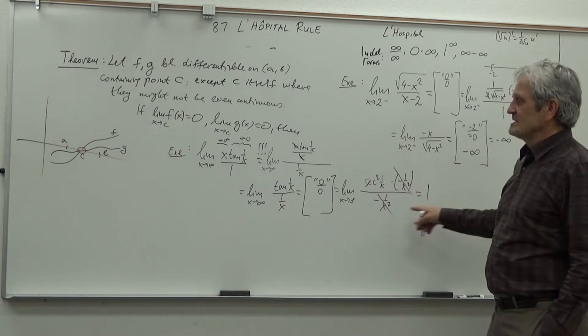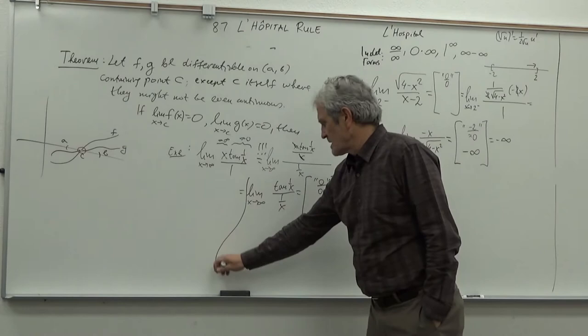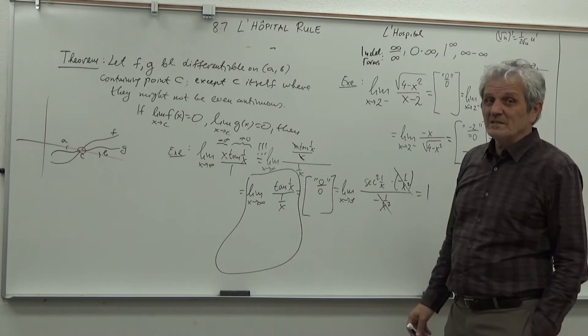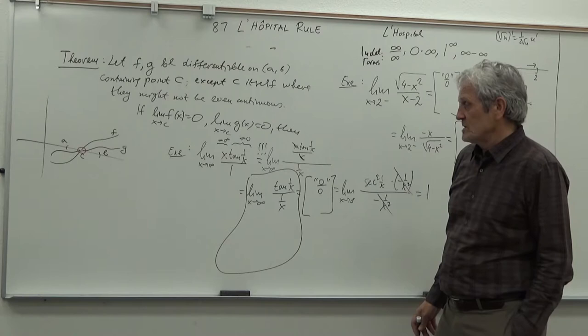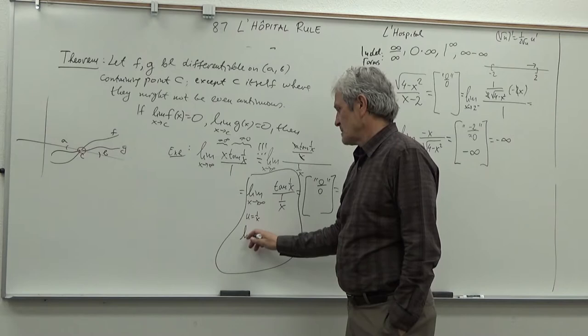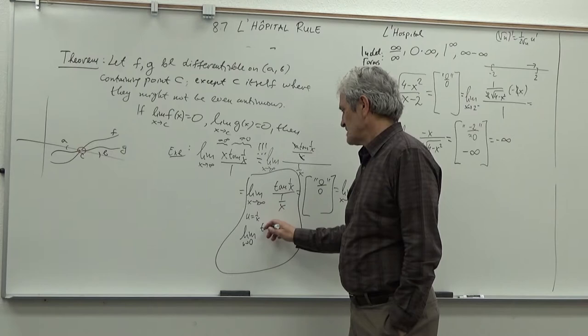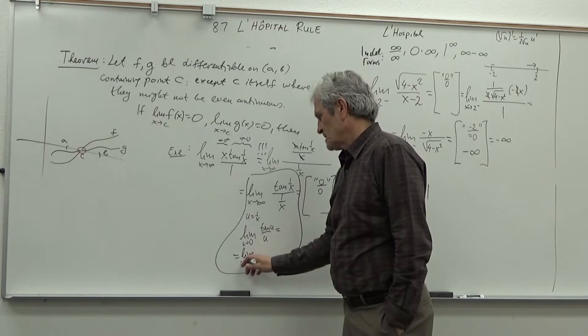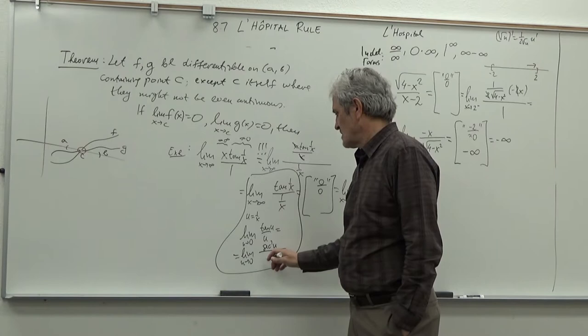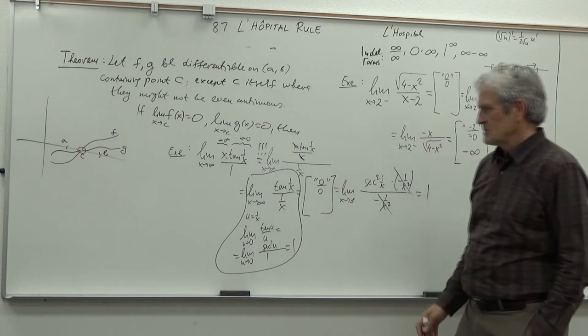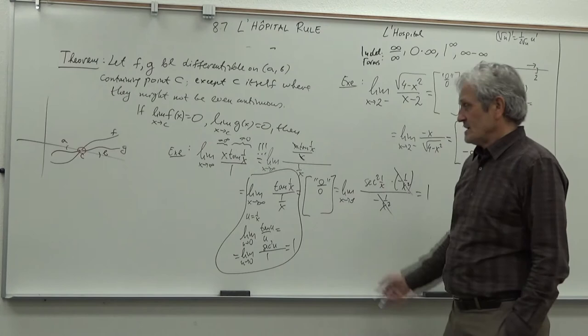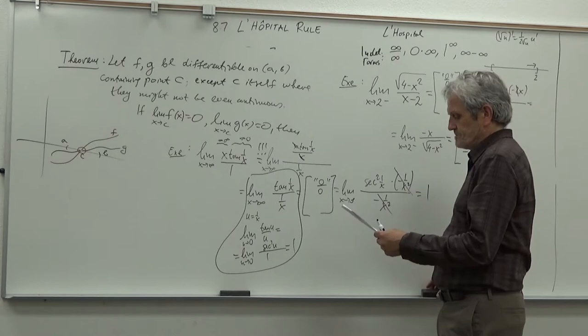There's an optional cleaner approach: substitute u = 1/x. Then as x → ∞, u → 0, and the expression becomes tan(u)/u. Applying L'Hôpital's rule gives sec²(u)/1, and plugging in u = 0 gives sec²(0) = 1. This is a little cleaner because you avoid the chain rule when differentiating.